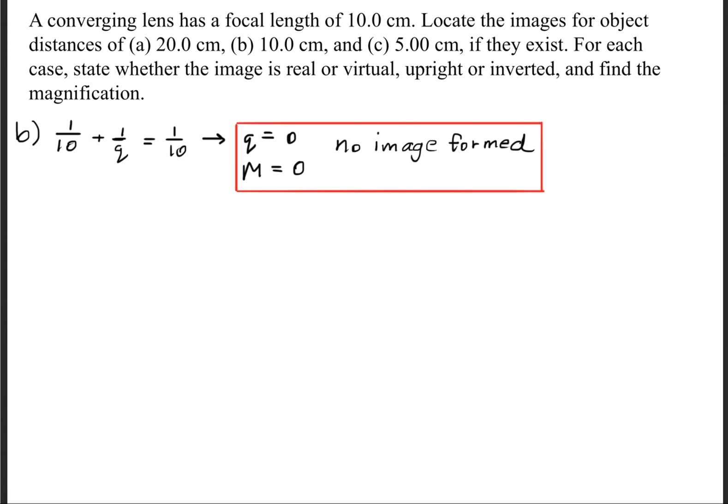So for part B, we'll go ahead and plug in all the numbers, but we'll see that the image is equal to zero. And when the image is zero, the magnification is also zero. So no image forms.